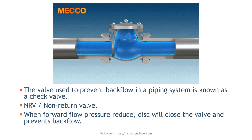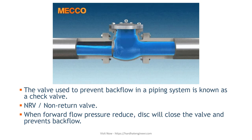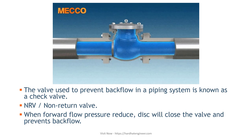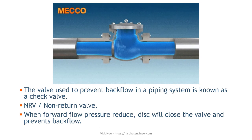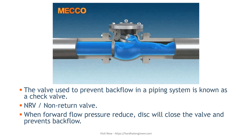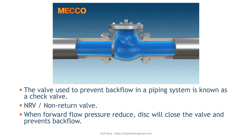The valve used to prevent backflow in a piping system is known as a check valve. It is also known as a non-return valve, or NRV. This is because the pressure of the fluid passing through the pipeline opens the valve, while any reversal of the flow will close the valve. It allows full, unobstructed flow in regular operation and automatically shuts as pressure decreases.